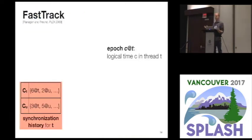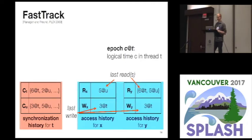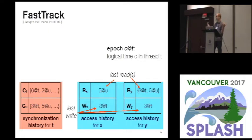Let me give a quick overview of FastTrack for background. FastTrack maintains a synchronization history — for every thread, we maintain a set of epochs, or logical times, at which this thread last synchronized with other threads. The second part of the analysis metadata is the access history. For every memory location such as X or Y, we maintain both a last write — the logical time at which any thread last wrote to this location — and the last read or reads — the logical time or logical times at which threads last read this location. We need multiple last reads in some cases because we want to support concurrent reads, which are completely safe.